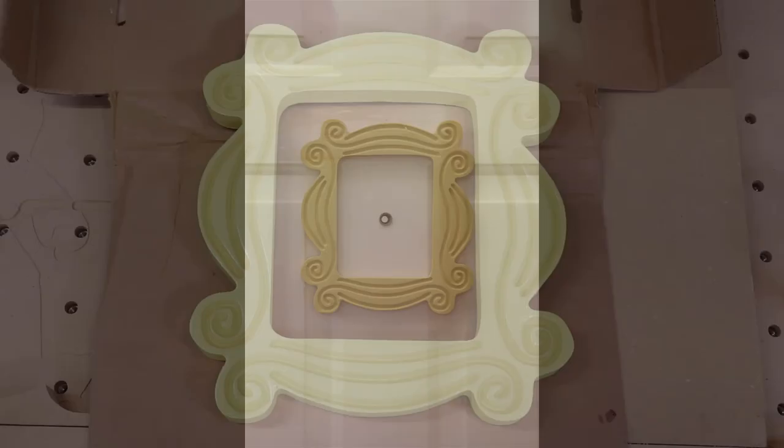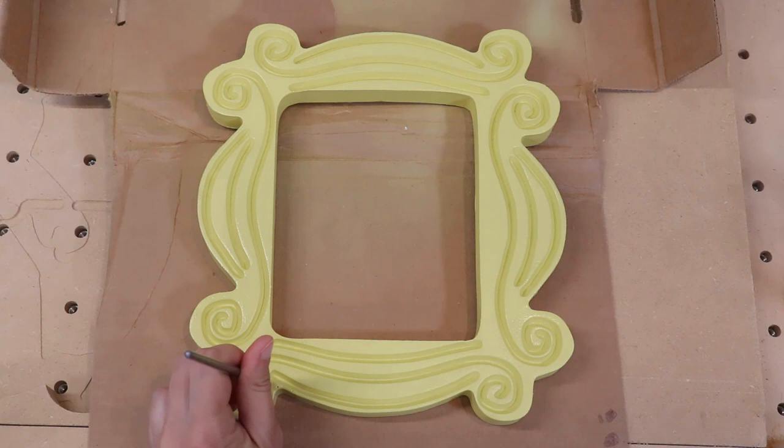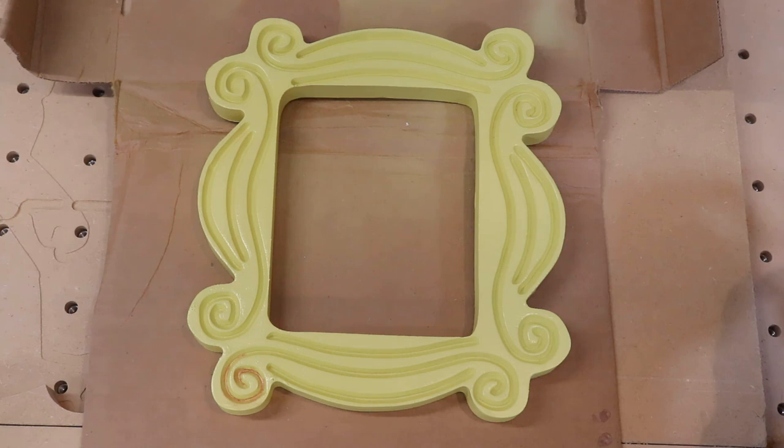Not going to lie, this next step made me nervous. I sprayed a little rose gold spray paint into a cup and lightly painted that into the grooves. I could have gone a bit heavier with the rose gold for a more defined end result, but I was going for more of a subtle look.